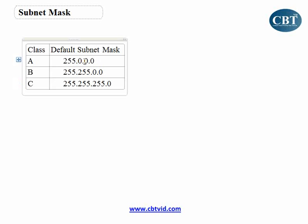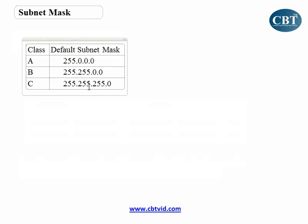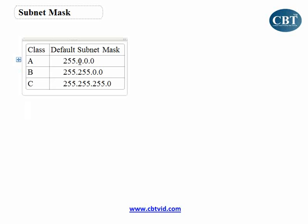This is the one that defines which part of the address is the network address and which part is the host address. Let me convert this address to binary. If I convert the first one to binary, I will get eight ones here.